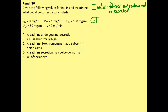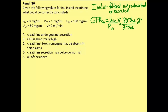To calculate the GFR using inulin, we use a simple clearance equation: urine concentration of inulin over plasma concentration of inulin, times the urine flow rate. That gives us 180 mg/mL in the urine divided by 3 mg/mL in the plasma, times a urine flow rate of 2 mL/min — equal to 120 mL/min, which is exactly a normal GFR value.